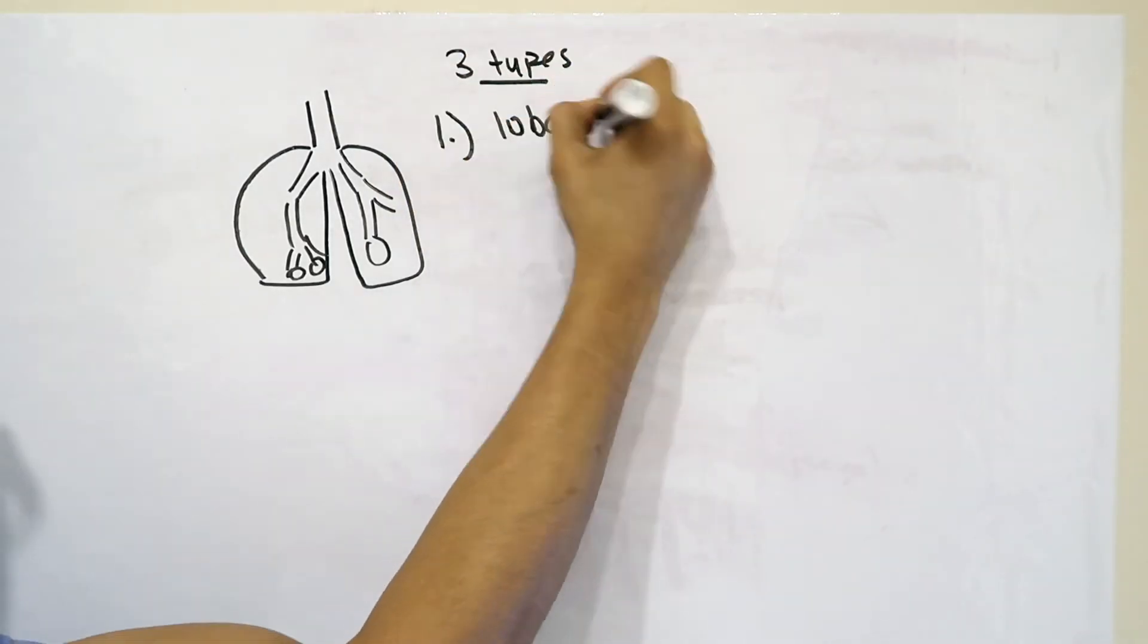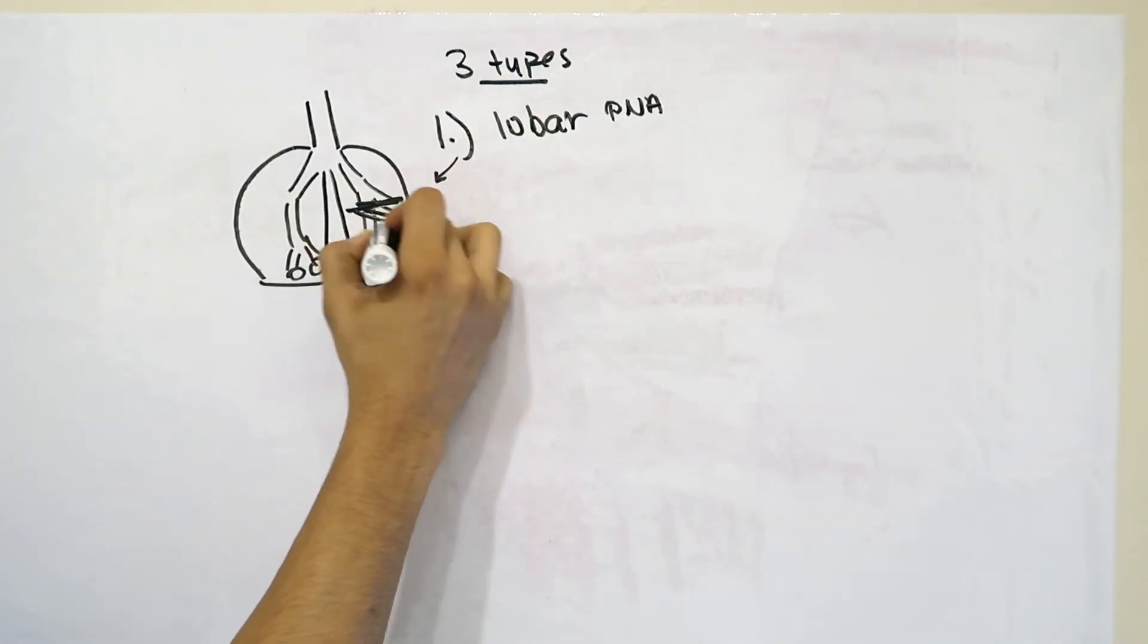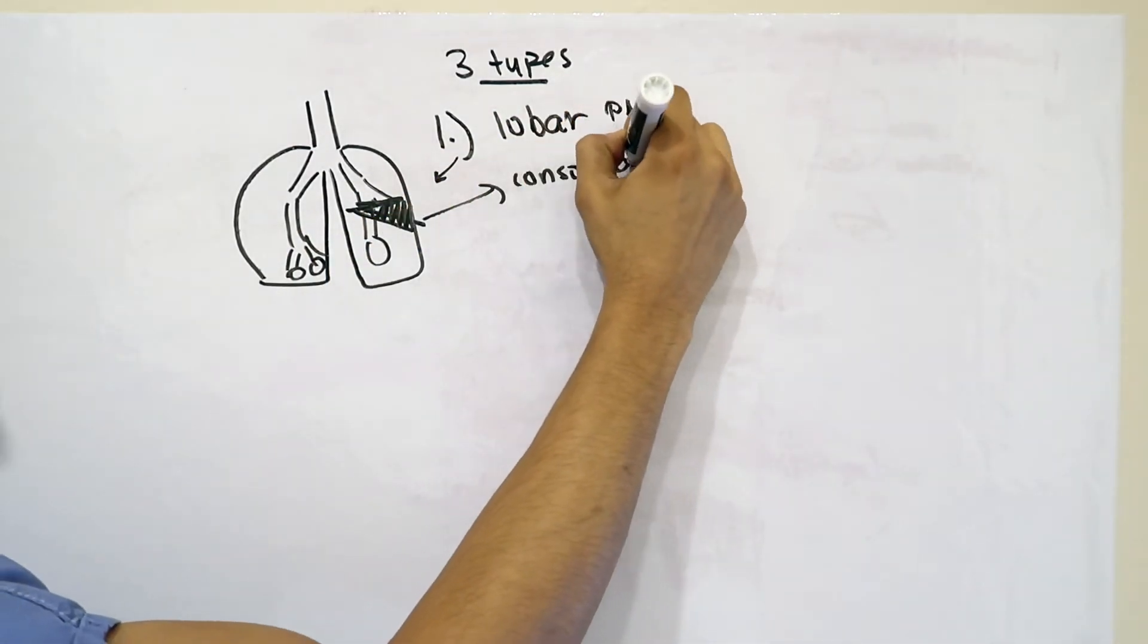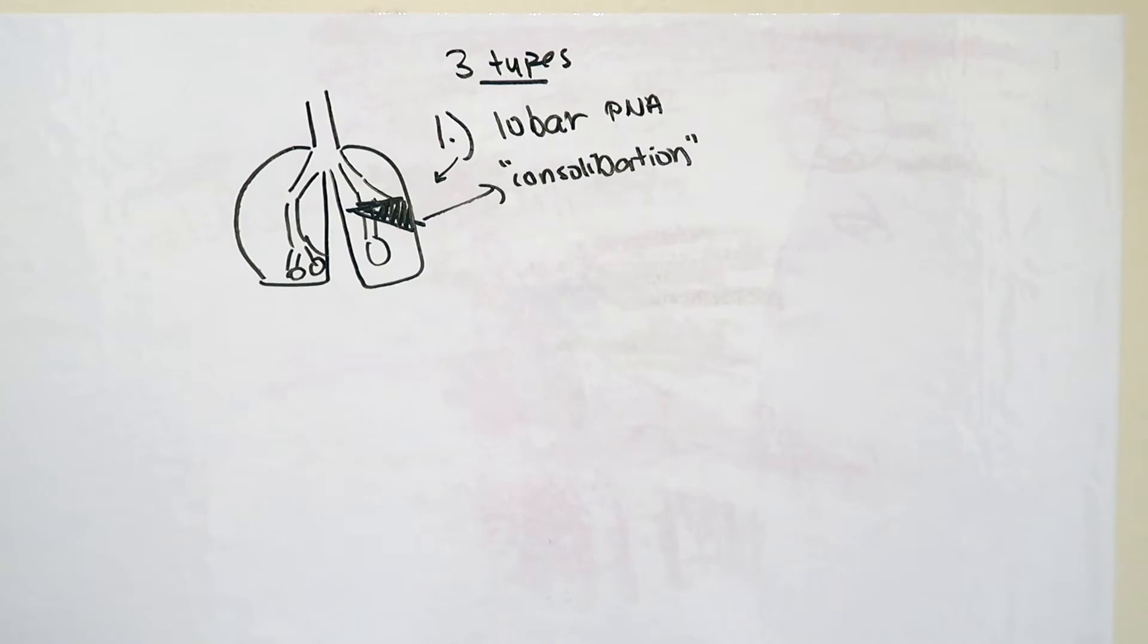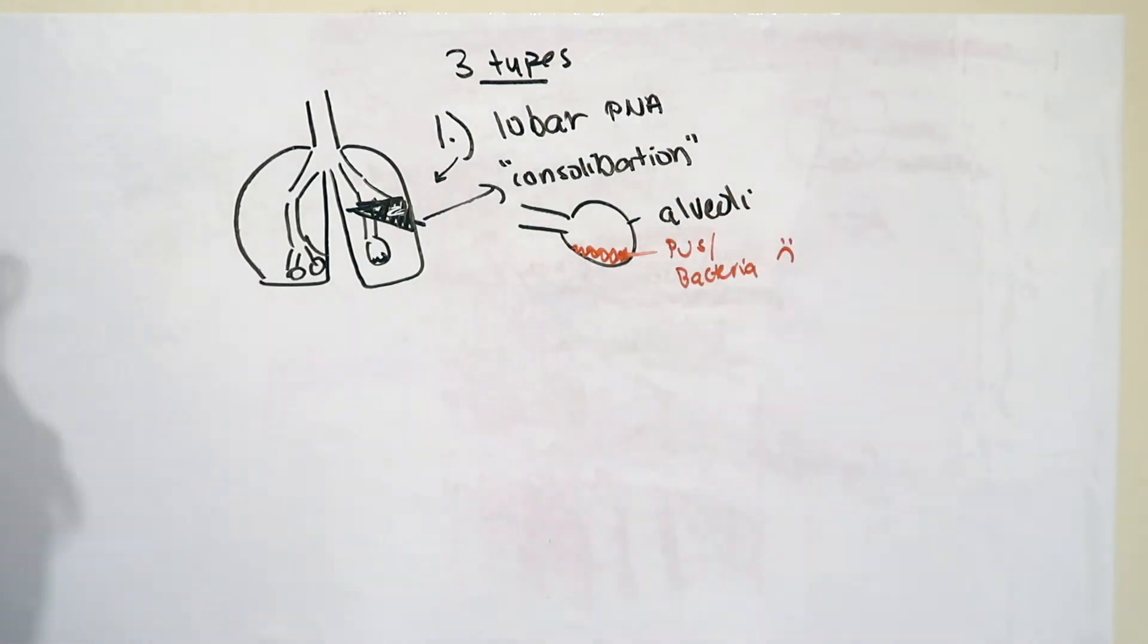The first type of infection is called a lobar pneumonia. This lobar pneumonia causes consolidation, or actual gunk, inside of the lungs, and usually infects one lobe. Essentially, the bacteria is able to grow and cause phlegm or pus inside of the alveoli. And this can literally be coughed up.